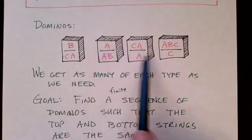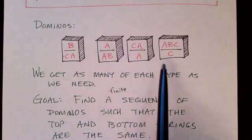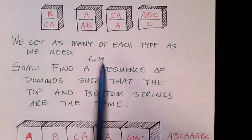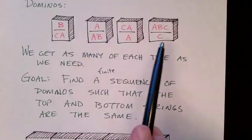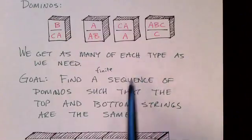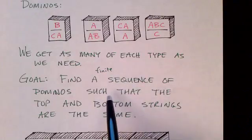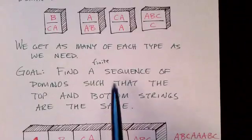Sometimes they're called dominoes, sometimes they're called tiles, same thing. Now the goal, given these four dominoes, is to find a finite sequence of dominoes such that the top string and the bottom strings are the same.